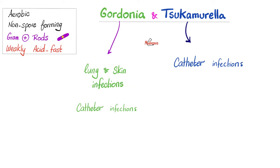We're done with Rhodococcus equi. Let's talk about Gordonia and Tsukamurella. Both are aerobic, non-spore-forming, gram-positive rods that are weakly acid-fast. Gordonia can lead to lung infections, skin infections, and catheter-related infections. Tsukamurella causes catheter-related infections. Can we call these nosocomial infections, i.e., hospital-acquired infections? Of course — where do you think you got the catheter from? From the hospital.